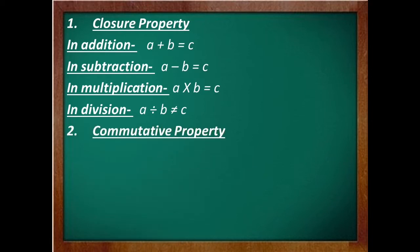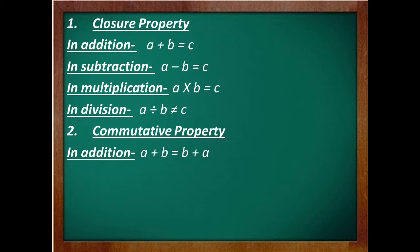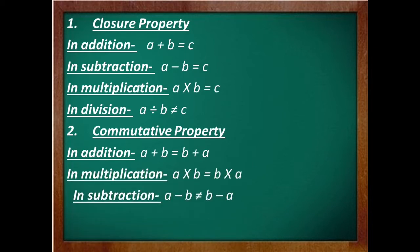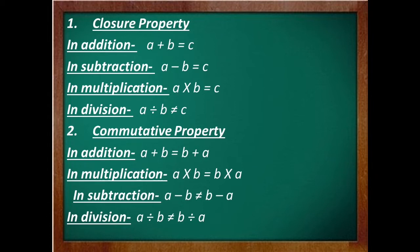The next property is commutative property. It says that changing the order while doing addition does not affect the sum. Changing the order while multiplying will not affect the product. However, on changing the order while subtracting or dividing, the answer will not come out to be the same. So integers are commutative under addition and multiplication only. Hopefully, it is clear to you.